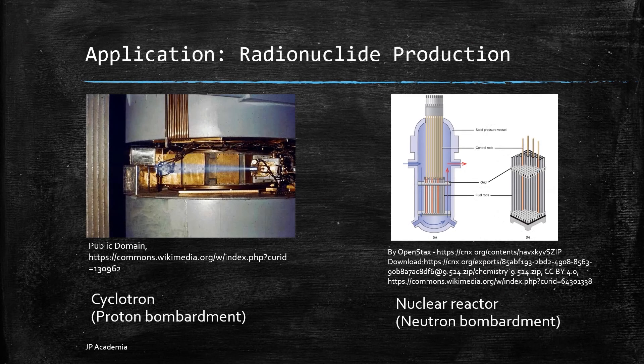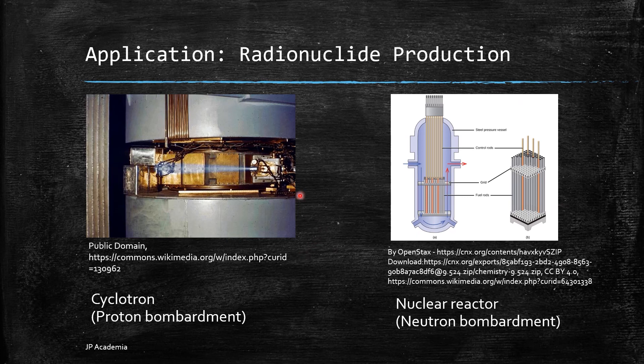Now let's go to the application. Most radionuclides used in the clinical setting are made by bombarding a nucleus with a particle such as a neutron or a proton. Beta emitters can be made by neutron bombardment using a nuclear reactor. While positron emitters and nuclides undergoing electron capture can be created by the bombardment of positive particles such as protons using a cyclotron.